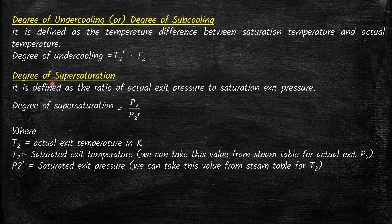The next term is the degree of supersaturation. It is defined as the ratio of the actual exit pressure to the saturation exit pressure, that is P2 divided by P2-dash. Just as with temperature, there are two pressure values. The saturation exit pressure P2-dash is found from the steam tables corresponding to T2. The ratio of P2 divided by P2-dash is the degree of supersaturation.